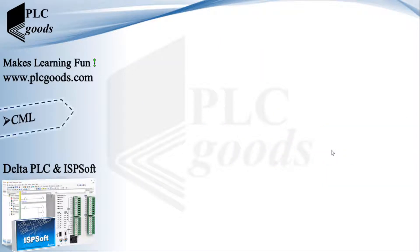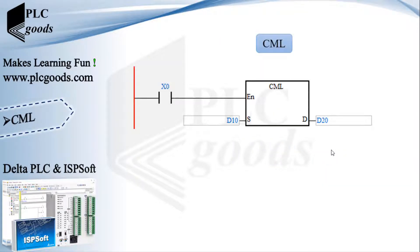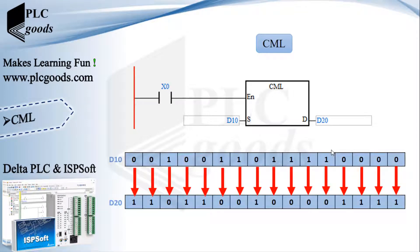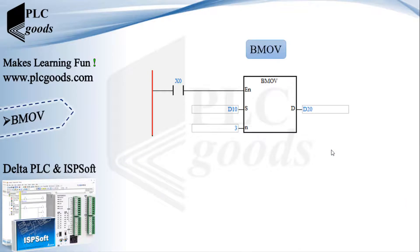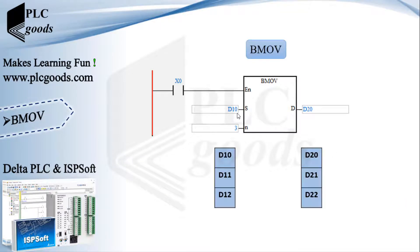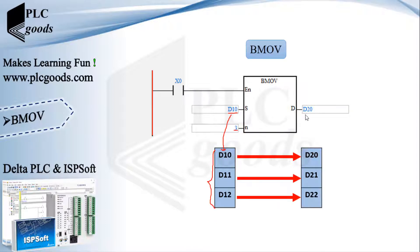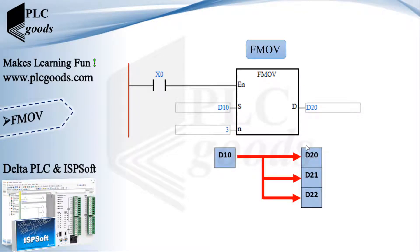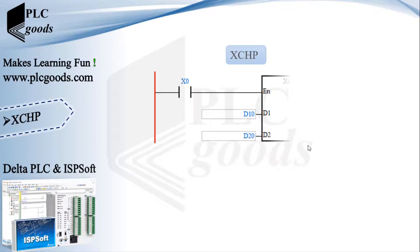The next instruction is CML — it reverses all bits of D10 and stores the result in D20. Now let's see how the BMOV instruction works. The contents in three registers starting from D10 will be moved to three registers starting from D20. The next instruction FMOV works similarly, but it moves only one number to selected addresses.